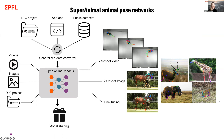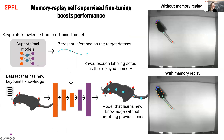One of the key solutions we came up with is overcoming catastrophic forgetting when adding new datasets — we don't want the model to forget what it already knew. To address this, we run the super model on a new dataset, do zero-shot inference on the target video or images, save those frames, and use them as pseudo-labels to act as a memory replay buffer. Now we have a dataset with keypoint knowledge, and the super animal model can learn new knowledge without forgetting previous ones.